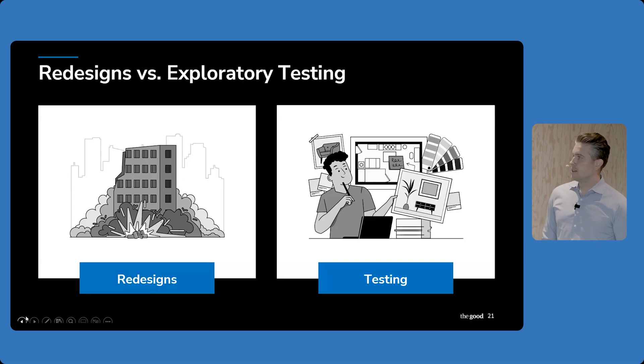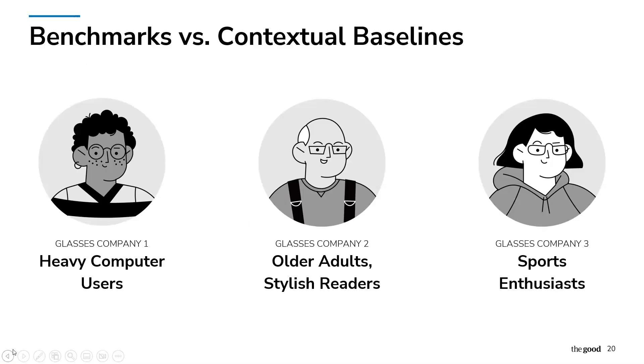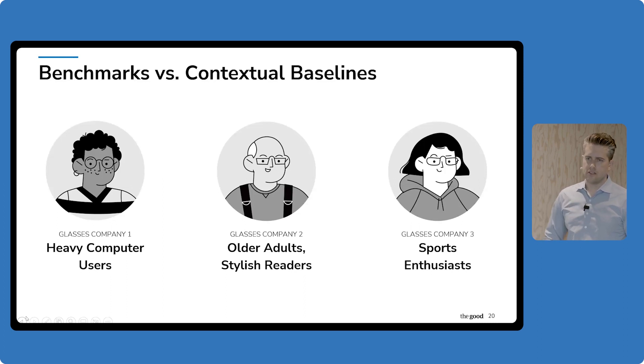We'll talk about this company we worked with, which is an eyewear company. We've worked with three eyewear companies over the history of The Good. One had heavy computer users. The other was older adults. The third was sports enthusiasts. That was their target market. They all sold glasses, but if we compare the conversion rates for each of these, they were wildly different. The older adults sold also in CVS and Walgreens on the rack. The heavy computer users were looking for a very technical product - blue blocking lenses that reduced eye strain. Sports enthusiasts wanted heavy duty eyewear that wouldn't break. They were all three different price points, all three different audiences, and all three completely different methods for converting, but they're all within eyewear.